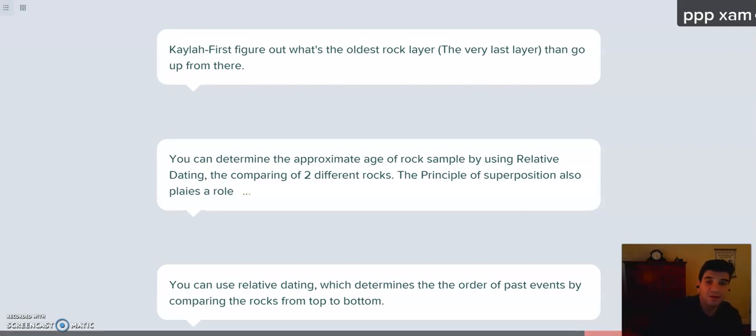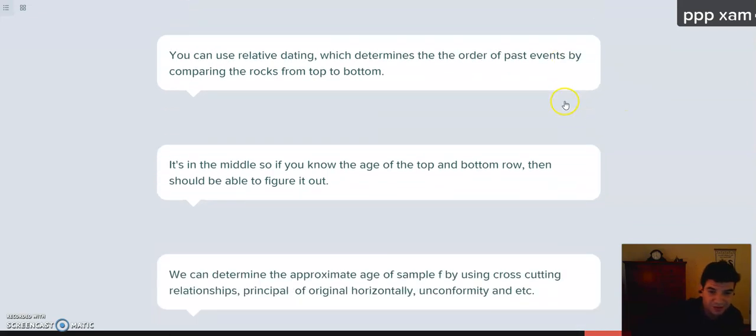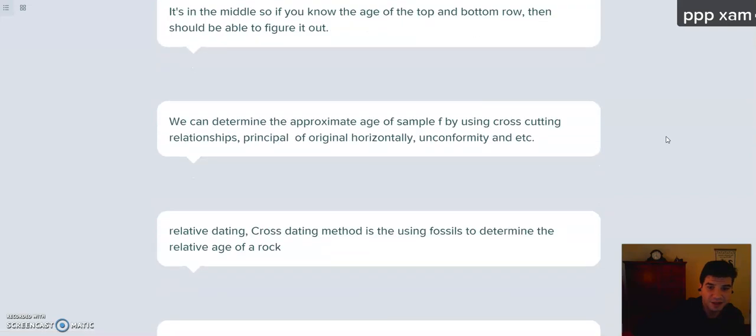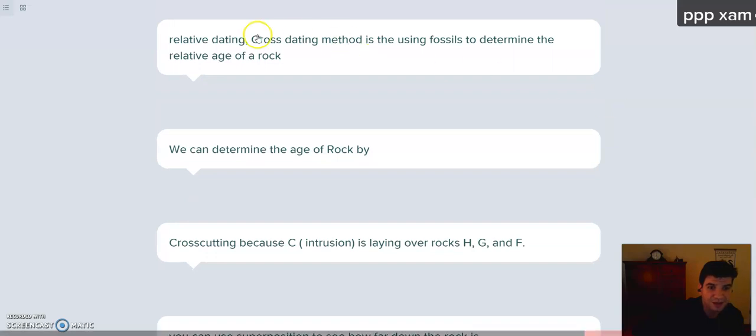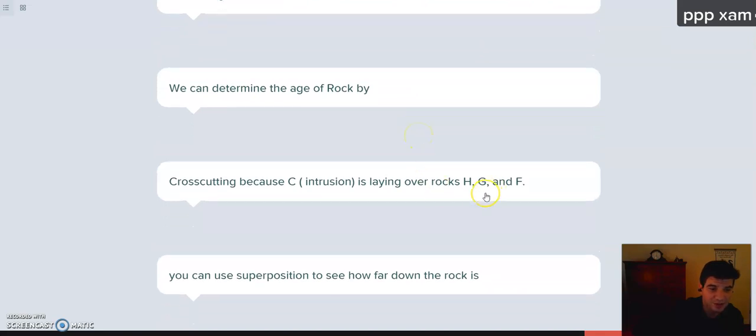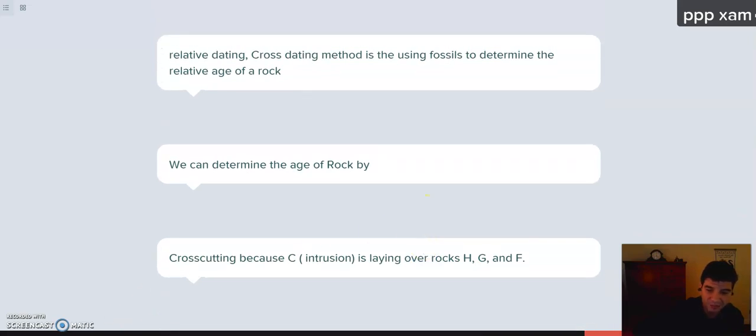Alright, so let's take a look at some of these answers. First figure out what's the oldest layer, the very last layer, then go up from there. You can determine the approximate age of a rock sample by using relative dating, comparing to different rocks. Principle of superposition, that's the one that tells us that the oldest is on the bottom. Relative dating, I'm just reading through some of the answers that people posted. You can determine the approximate age of sample F by using cross-cutting relationships, principle of original horizontality, cross dating method, using fossils, that's a very good one. Fossils can definitely, especially index fossils, can give us a definite answer. Alright, I am going to move forward just for sake of time. Thank you for those answers.